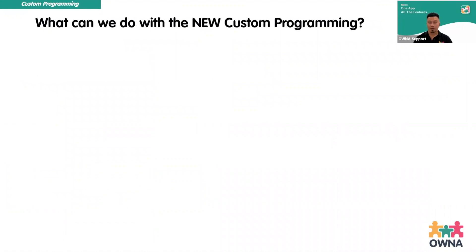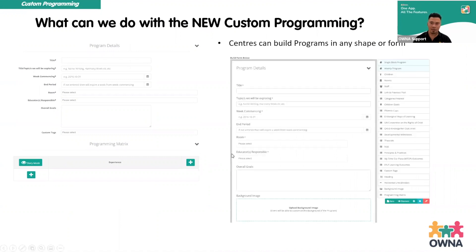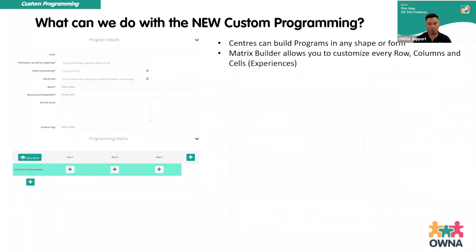With our new custom programming — if you've already used our learning docs — it's exactly the same builder. You'll be able to customize how the fields look, how much information you want to display. The programming templates have different fields: they'll have most of what the learning docs have — like frameworks and text boxes — but there will also be a programming matrix added in, which I'll go through in more detail during the demo. Each field will correlate to what you fill in when creating a new program, giving you full customizability of field types, whether text boxes or text areas, and the ability to customize language.